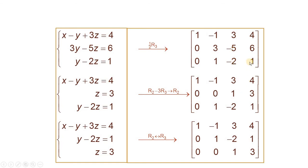Here we will have minus 3 plus 6 is equal to 3, and this is our third row. Now we will interchange the second row. So here we will get 1 — this is our desired leading entry. Now here is 1 and here is 1. This matrix is now in the row echelon form.